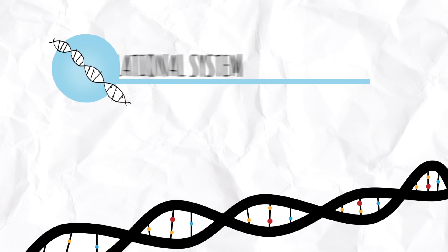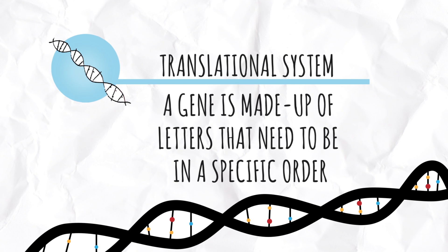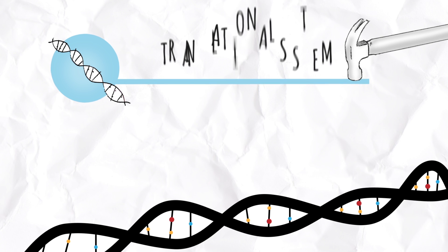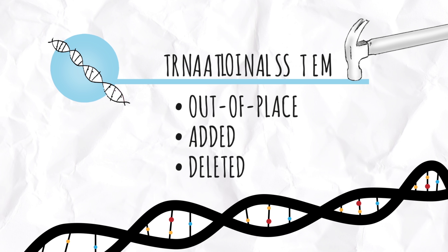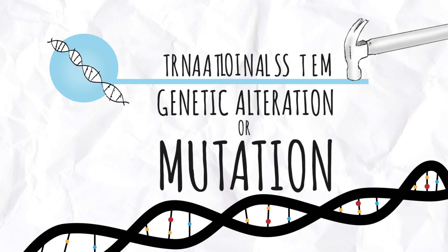Our genetic code works along a very similar translational system. A gene is made up of letters that need to be in a specific order for healthy proteins to be made. If a letter is out of place, added, or deleted, it too may not be understood by the human body. We call this a genetic alteration or a mutation.